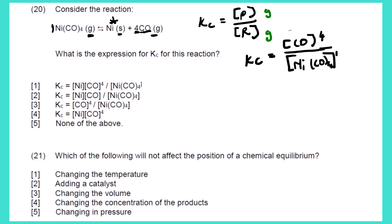Looking at our options: option 1 considers Ni, which is in solid phase — not correct. Option 2 also considers Ni — not correct. Option 3 has CO⁴ in the numerator divided by Ni(CO)₄ in the denominator, which matches our expression — this is the possible solution. Option 4 does not consider the reactant, which is wrong. None of the above is incorrect because option 3 is correct. So option 3 is our correct answer.